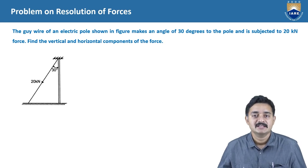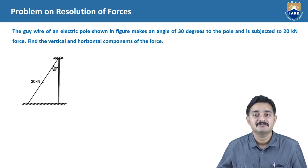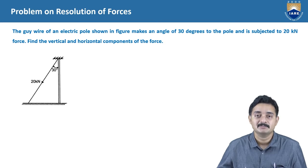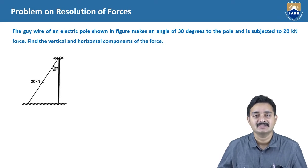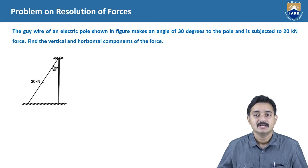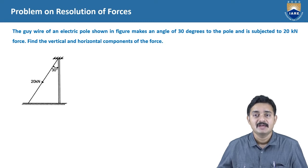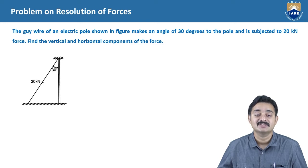In engineering mechanics problems, even though the problems represent field problems — that is, practical problems — we have to look into the problem as a system in which some forces are acting and there are some effects that the bodies are undergoing. Then we have to solve for the unknown values. Here in this problem, we have to see that the force of 20 kN is acting at an angle of 30 degrees to the horizontal and we need to resolve this force into components.